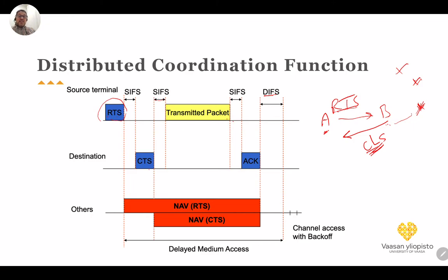In summary, any source or device that senses the channel is busy will not send until the channel is free. If a collision occurs during transmission, every terminal goes to a backoff time and tries again after a random delay to check whether the channel is free.